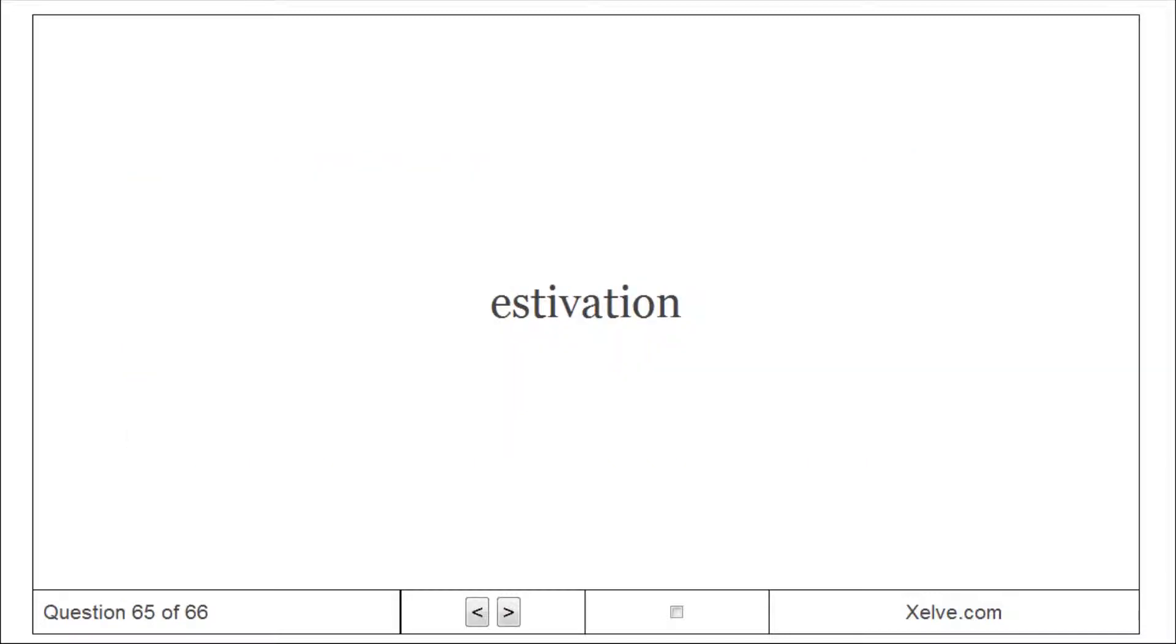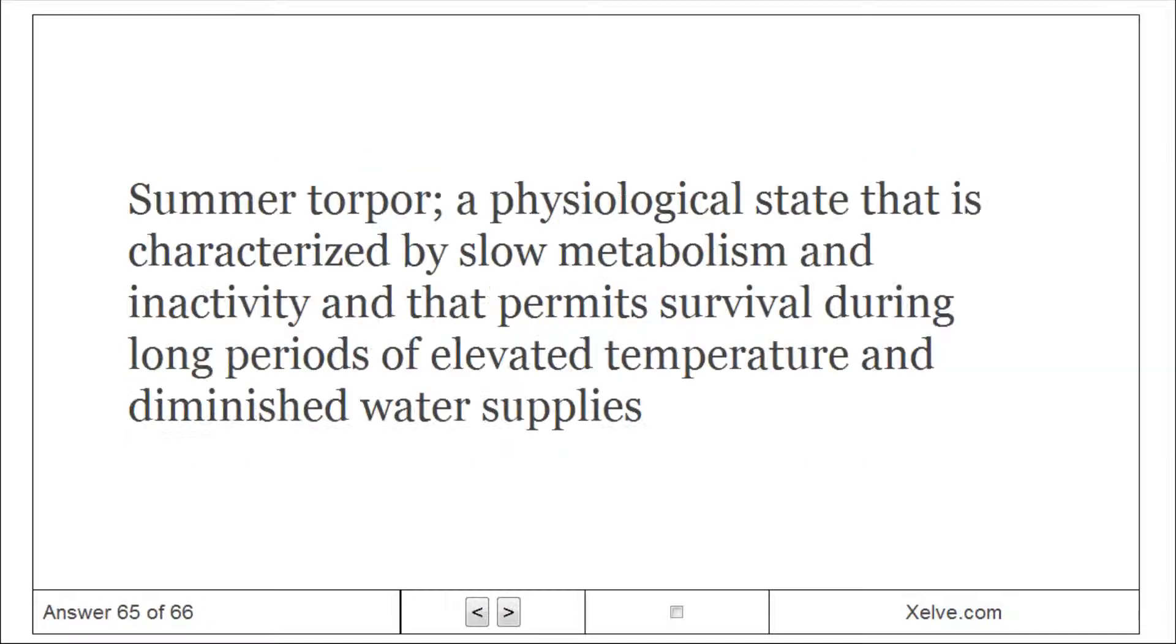Estivation: Summer torpor. A physiological state that is characterized by slow metabolism and inactivity and that permits survival during long periods of elevated temperature and diminished water supplies.